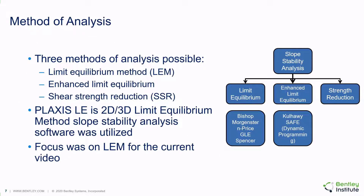There are three primary methods of analyzing slope stability. Firstly is the limit equilibrium method. There is also the shear strength reduction finite element method. And in between these two is the enhanced limit equilibrium, where we use stresses from a finite element method as the basis for performing a limit equilibrium analysis. We will be focusing on the limit equilibrium method slope stability analysis in this video.